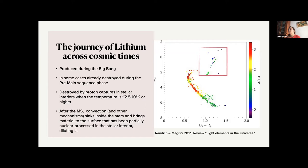So many mechanisms, like convection, but also other mechanisms, sink inside the star and bring material to the surface, which is processed in the stellar interior. So what we observe in the giant phase is a strong depletion.